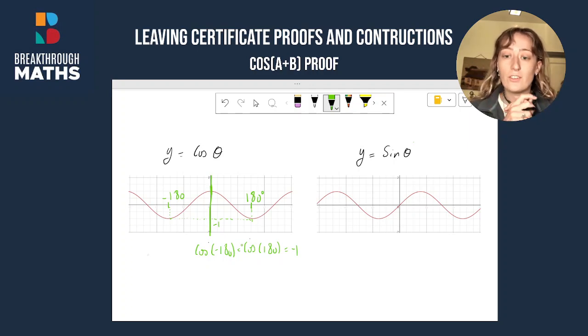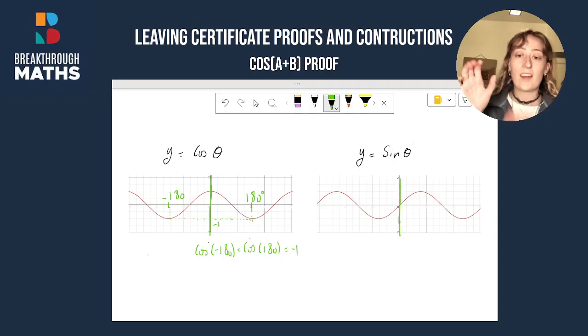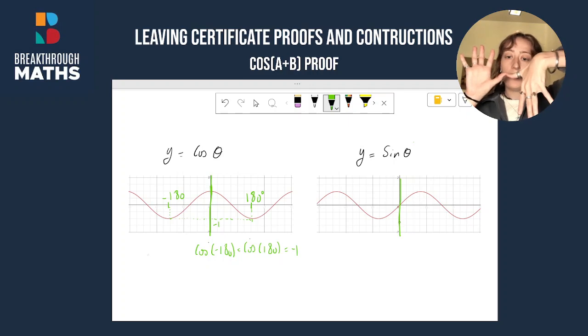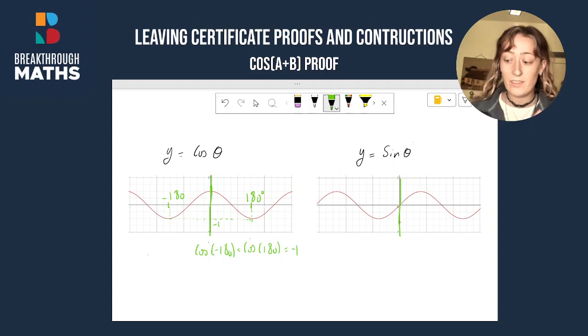Now, draw your attention to the y equals sine θ graph. A little bit different this time. Again, I'm going to draw a vertical line through the y-axis here. And what we'll see this time is that through the y-axis, the graph is vertically flipped. One side of the graph is like this, the other side is like that. Let's look at the mathematical significance of this.